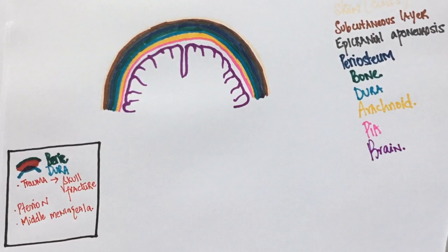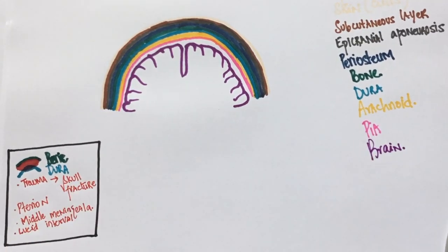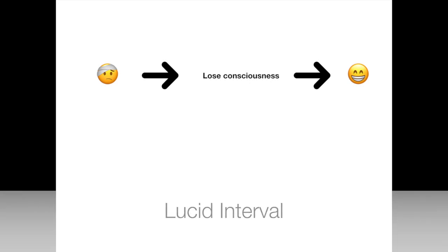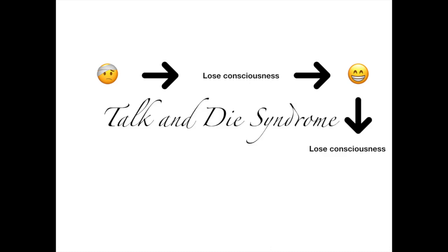A characteristic feature of epidural hematoma is a brief loss of consciousness followed by a lucid interval. A patient would first get injured and lose consciousness for a while, then gain consciousness and feel completely alright, like nothing ever happened. This conscious phase is known as the lucid interval. Once the hematoma begins expanding, the patient's condition will deteriorate and he would lose consciousness once again. This is also known as talk-and-die syndrome.